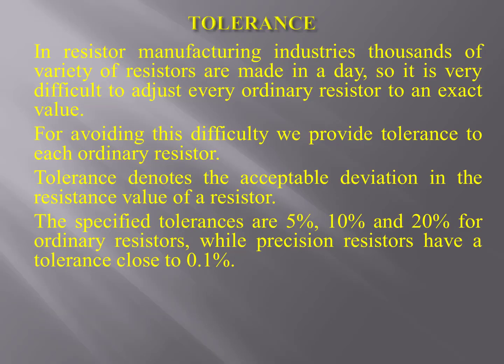In resistor manufacturing industries, thousands of varieties of resistors are made in a day, so it is very difficult to adjust every ordinary resistor to an exact value. To avoid this difficulty, we provide tolerance to each ordinary resistor. Tolerance denotes the acceptable deviation in the resistance value. The specified tolerances are 5%, 10%, and 20% for ordinary resistors, while precision resistors have a tolerance close to 0.1%.